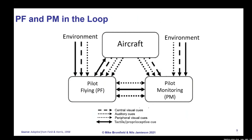Taking this to a crew arrangement with a pilot flying (PF) and pilot monitoring (PM): in a two-crew cockpit, both pilots sense visual, oral, and tactile-proprioceptive cues. The pilot flying has a direct connection with the aircraft through tactile and proprioceptive cues — it's two-way communication, with force, position, and feedback on intended actions. The pilot flying also receives visual and oral cues both peripherally and centrally.